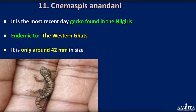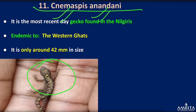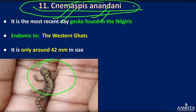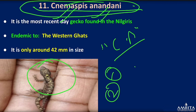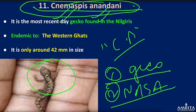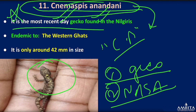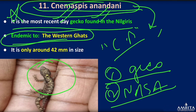Next is a gecko species — Cnemaspis nairi (or a similar Cnemaspis species). It is a recently discovered day gecko found in the Western Ghats and is endemic to the Western Ghats region only, about 42 mm in size. If a question comes on this, they might ask about this specific Cnemaspis species being in the news, so just be aware of its existence and that it is endemic to the Western Ghats.